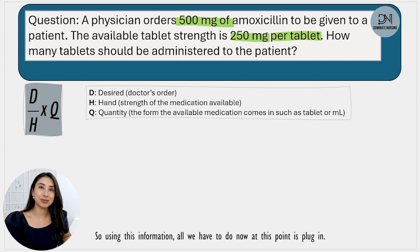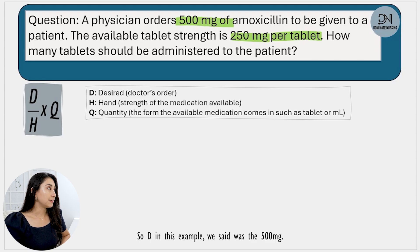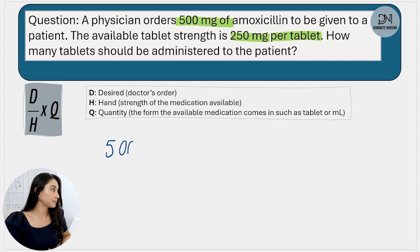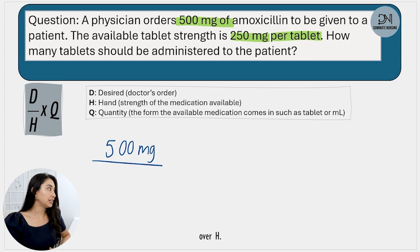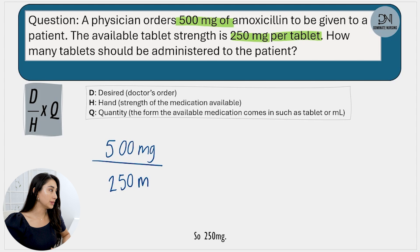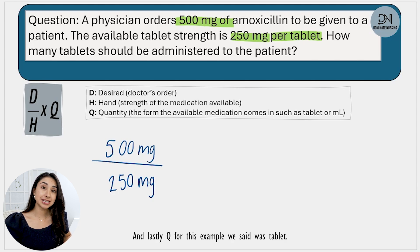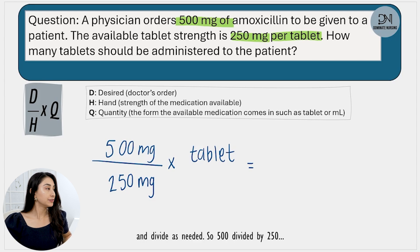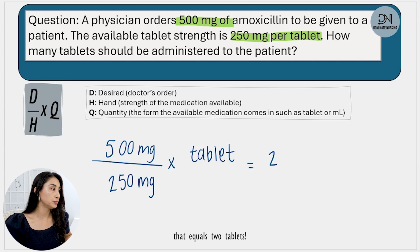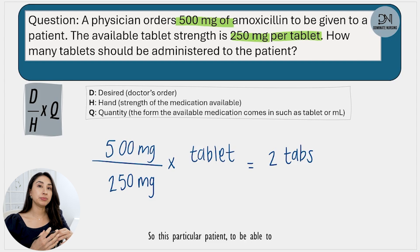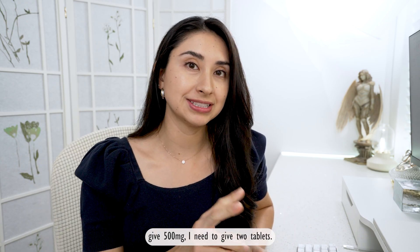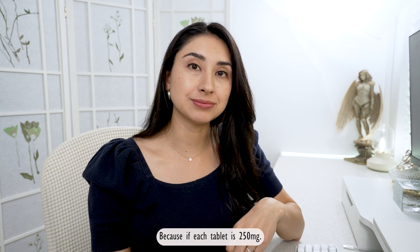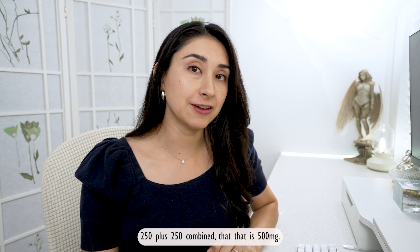So using this information, all we have to do now is plug in. D in this example is 500 milligrams, so I'm going to put 500 milligrams over H, which is 250 milligrams, times Q, which is tablet. So 500 divided by 250 equals two, times tablet — that equals two tablets. This patient needs two tablets to receive 500 milligrams, and it makes sense because 250 plus 250 equals 500 milligrams.